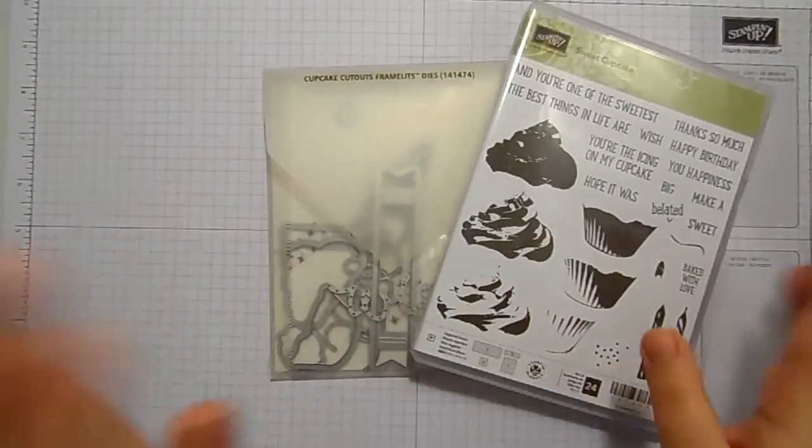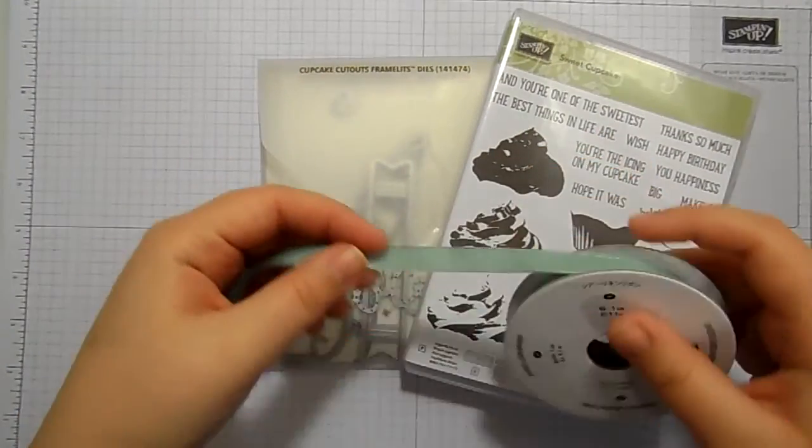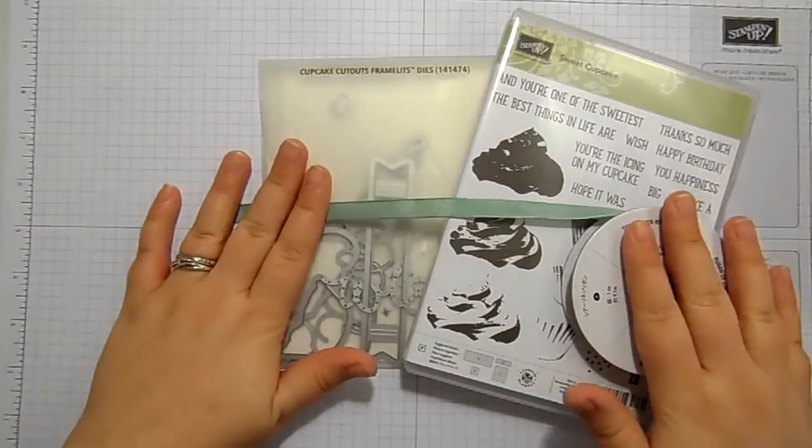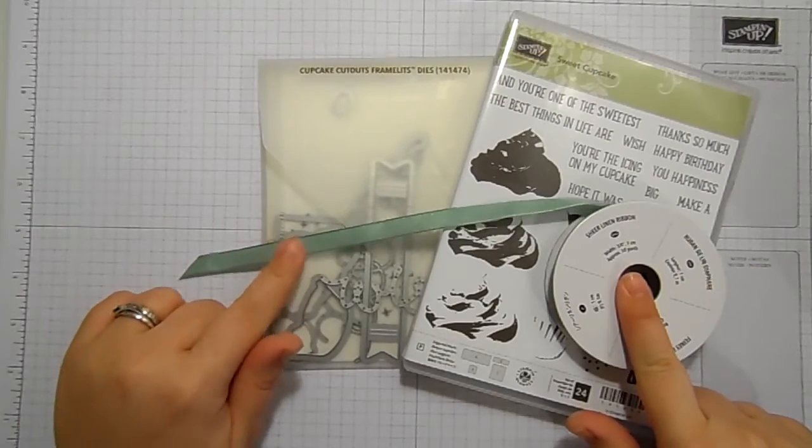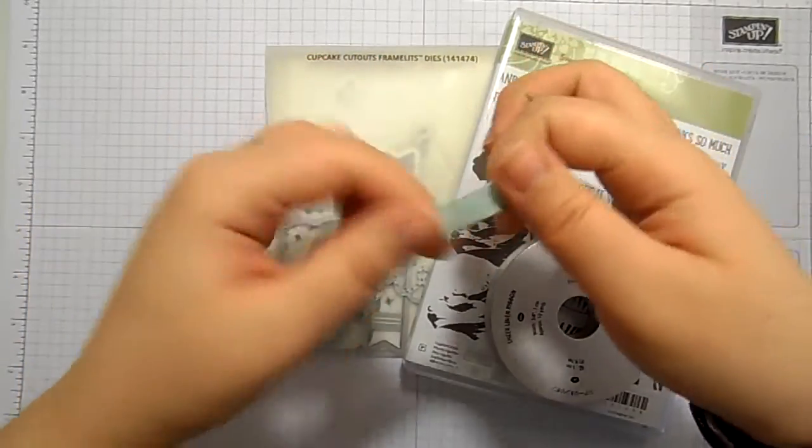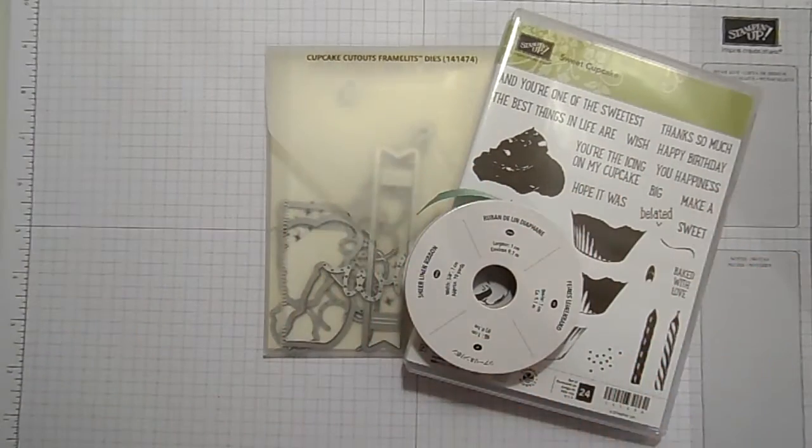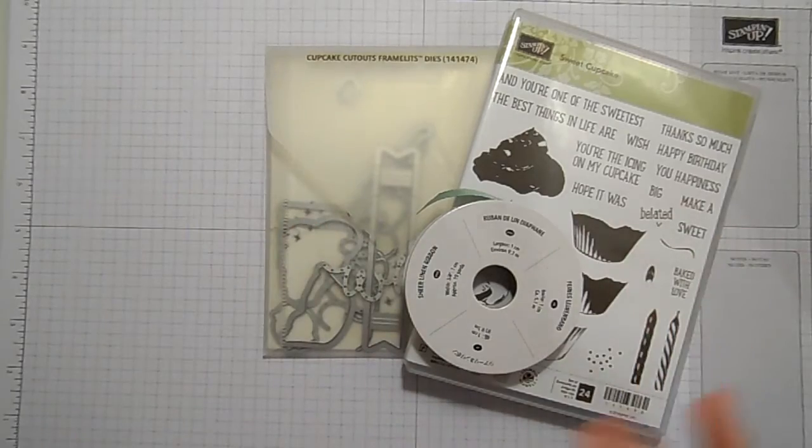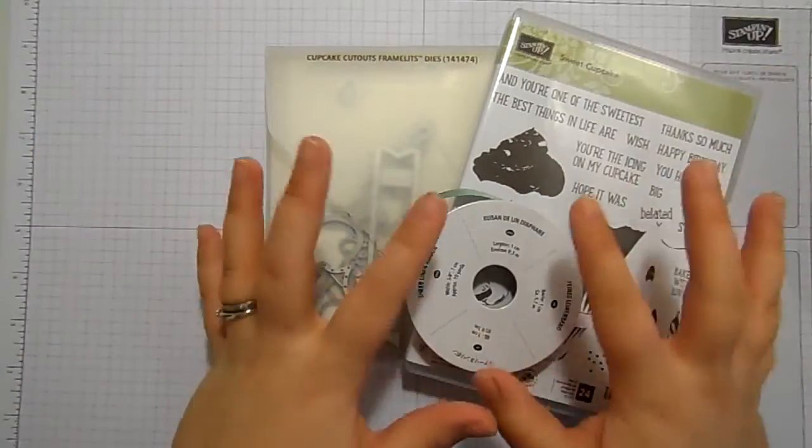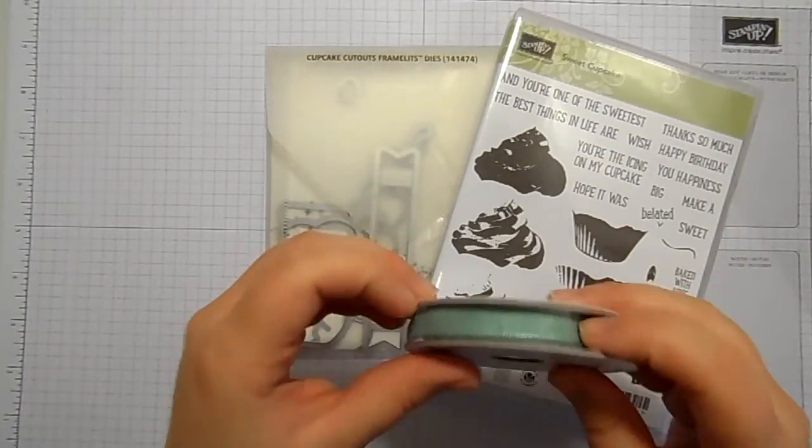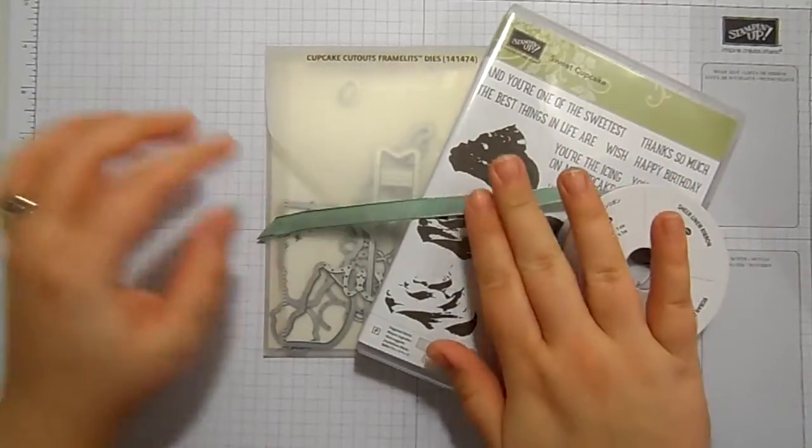So this time you will get this stamp and die bundle along with a brand new reel, obviously mine is used, of the Mint Macaron Sheer Linen Ribbon that is just stunningly gorgeous. There's always product in my classes so last month it was the Beautiful You stamp set and watercolor pencils, but that product will vary from fortnight to fortnight. This time you've got the Sweet Cupcake bundle and the Linen Ribbon.